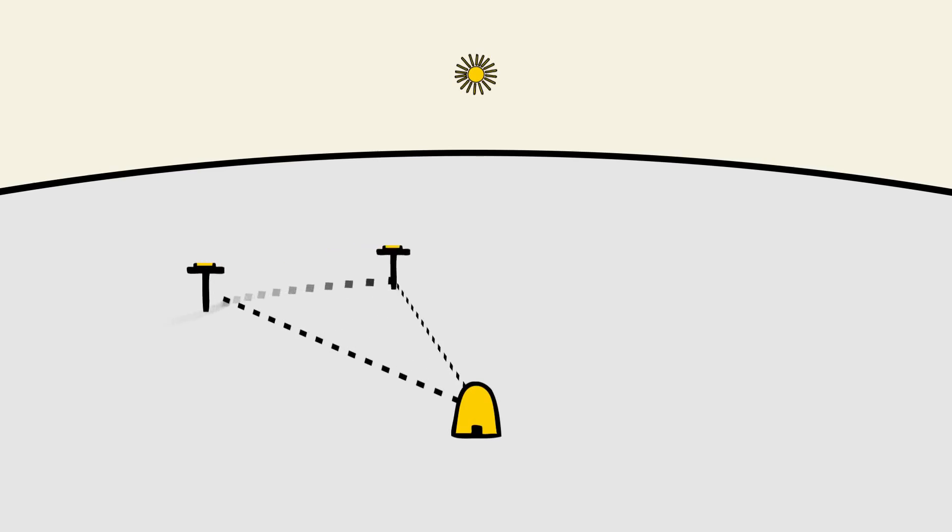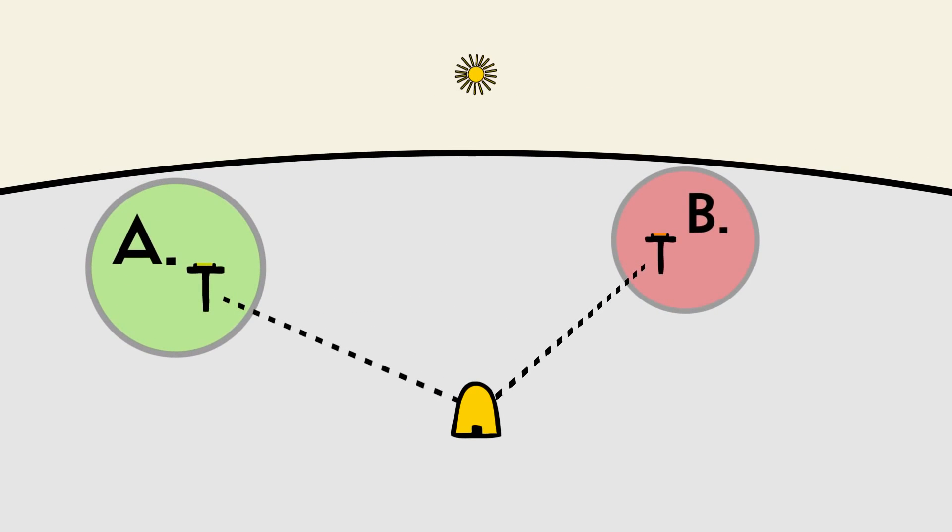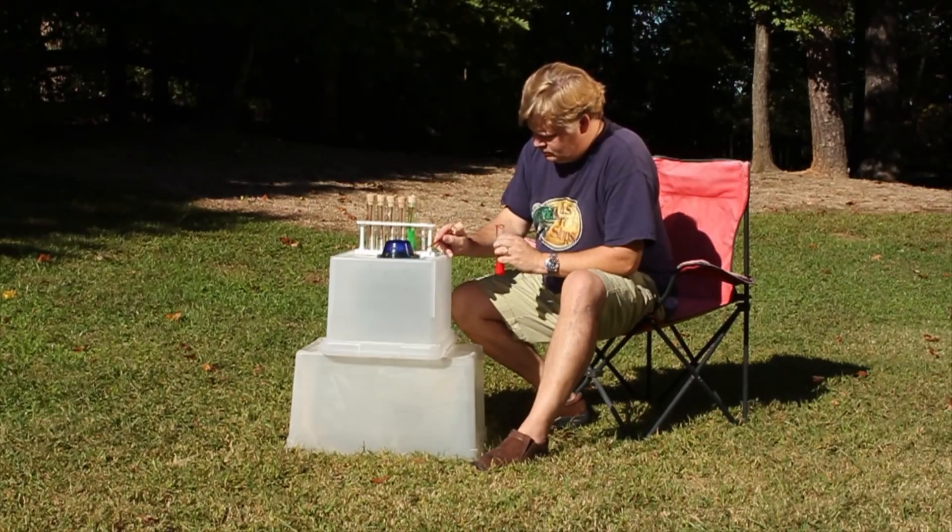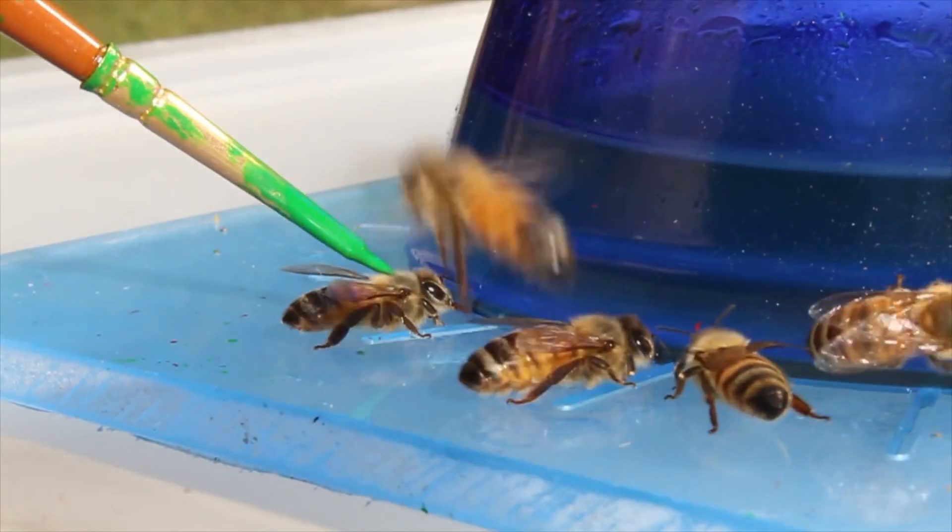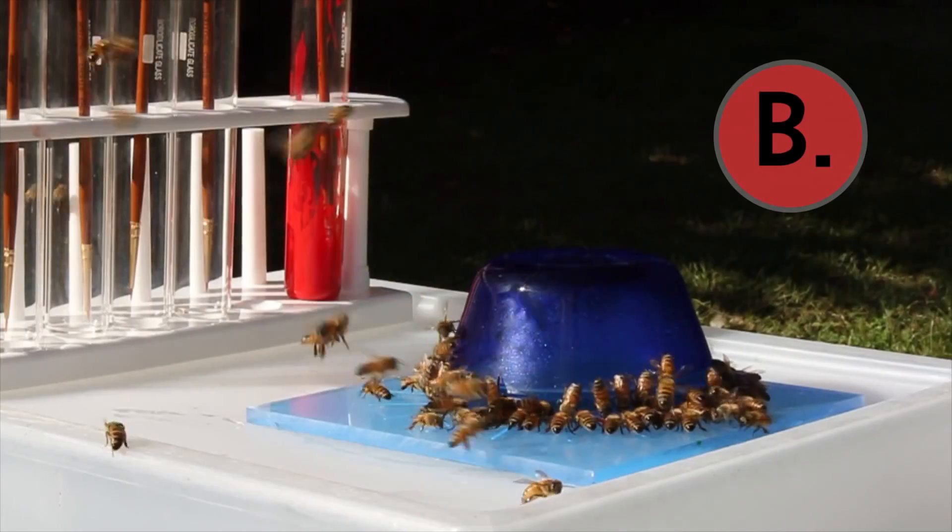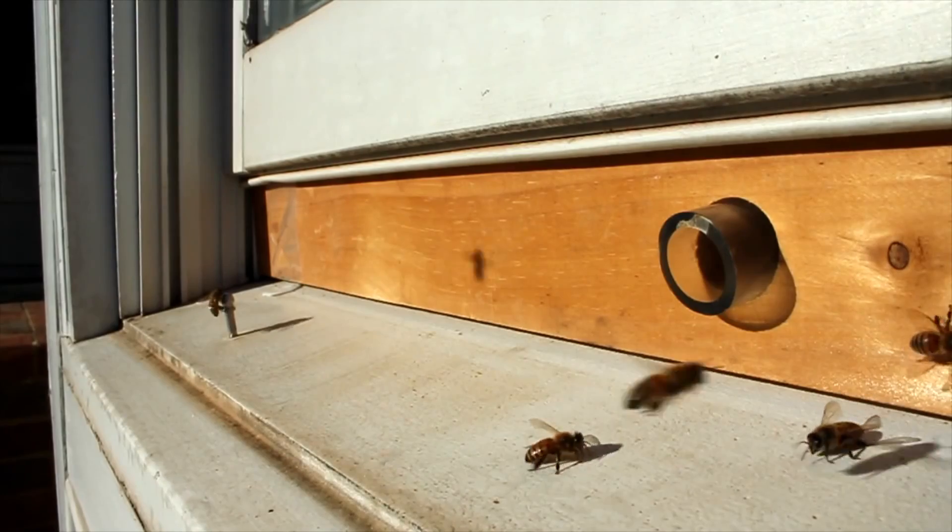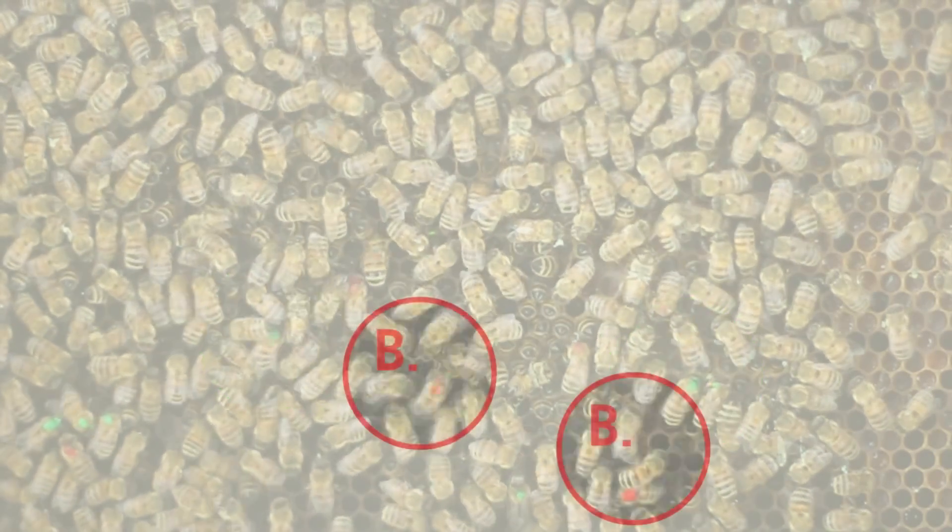Two feeders are placed in different directions away from the hive. At each location, visiting honeybees are marked with a small spot of paint. A separate color of paint is used at each station. So when a bee returns to the hive, it can easily be determined which feeding site it visited.